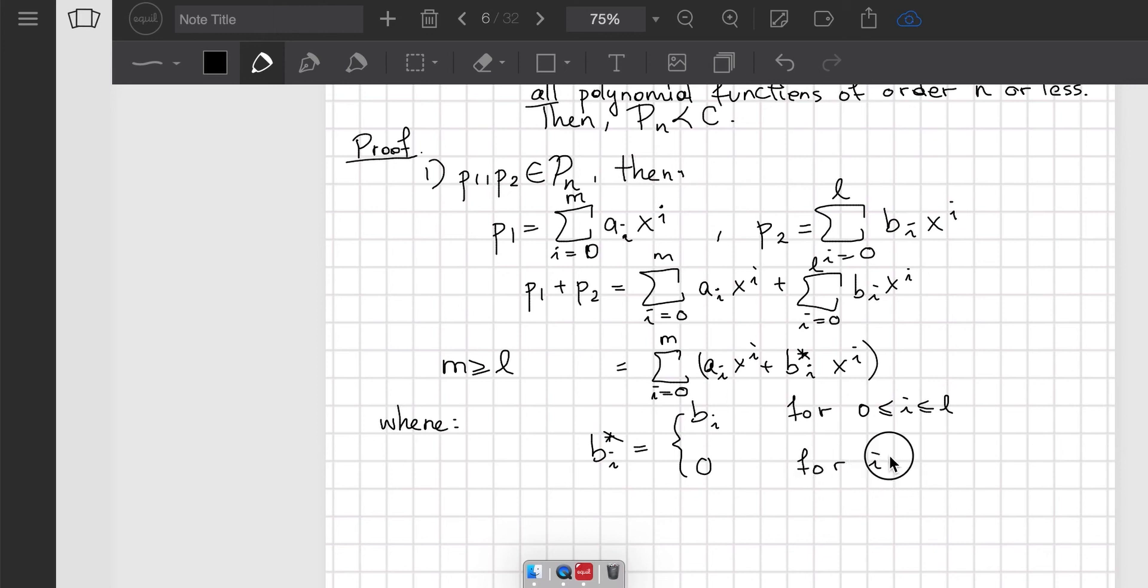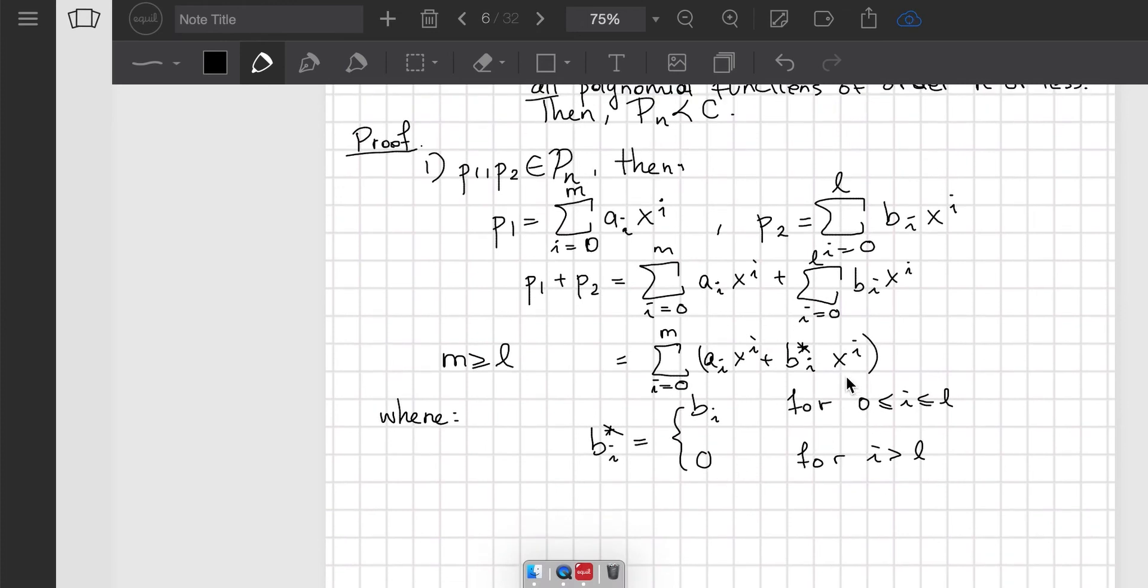How will I define these coefficients? Well, b_i* equals b_i for i between 0 and l, and 0 for i greater than l, because the polynomial P2 is only of order l. If I rewrite this, it equals the sum from i=0 to m of (a_i + b_i*) times x^i, which I can define to be c_i times x^i. That is clearly a polynomial, so P1 plus P2 does indeed belong to P_n.